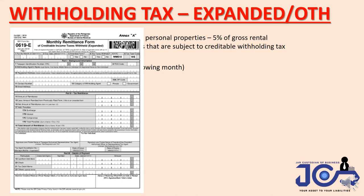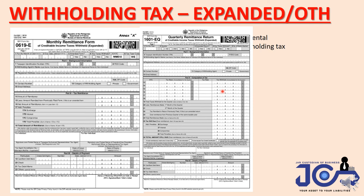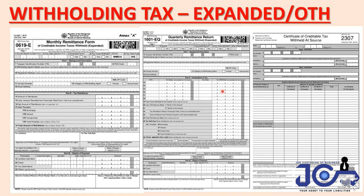The forms used are 0619E for monthly, 0601EQ for quarterly, and Form 2307. Form 2307 is especially important when renting — you present this to your lessor so they can credit the 5% withholding tax you withheld from their rental. Also, make sure your lessor has their own business permits. If they don't have a permit, the withholding becomes useless because you'd end up paying it yourself without being able to pass it on. So always verify your lessor's permits before renting.